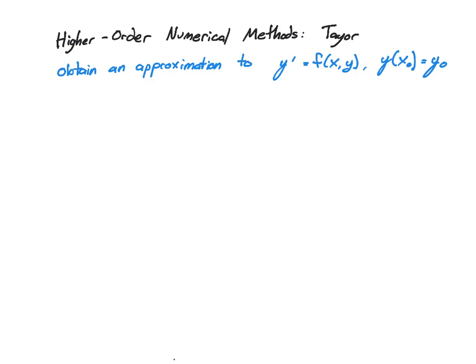Hello, this is Jason Harrington, and today we'll be doing higher-order numerical methods for approximating a differential equation, using the Taylor series. Just like before, we're going to have the same ODE: y prime is equal to f of x comma y, so it's a multivariate function, and y is a function of x, so y of x-naught is equal to y-naught — that's our initial conditions.